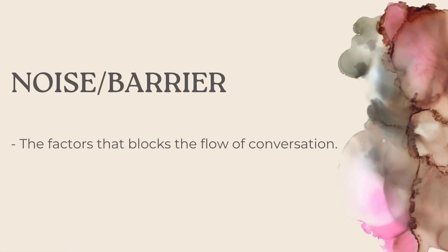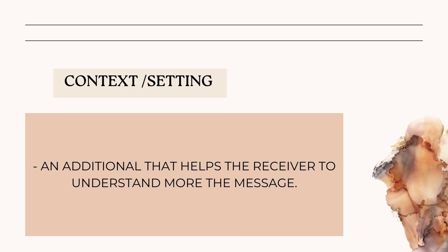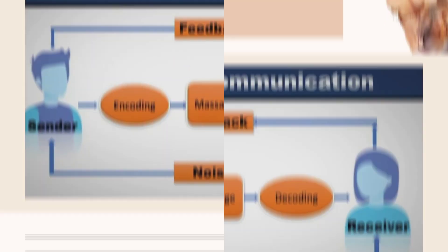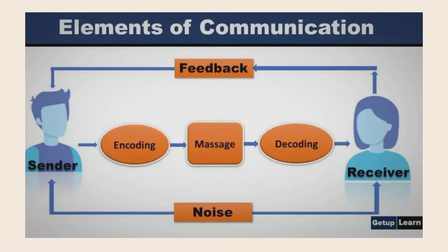The next is noise or barrier — the factor that blocks the flow of conversation. Examples include others talking in the background, background music, a startling noise, and acknowledging someone outside of the conversation. Lastly, context or setting: an additional element that helps the receiver understand the message more.